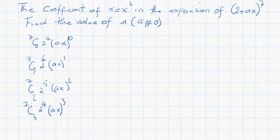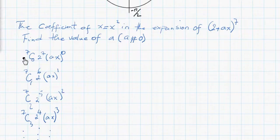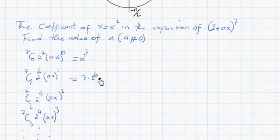When we work out the first term here, it gives us 2 to the power of 7. The second one is going to give us 7 choose 1 is 7, then we have 2 to the power of 6, times ax. This is going to be 448a.